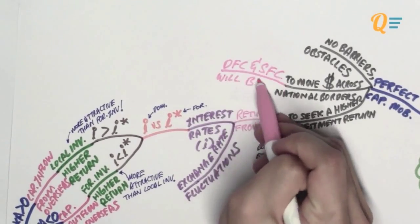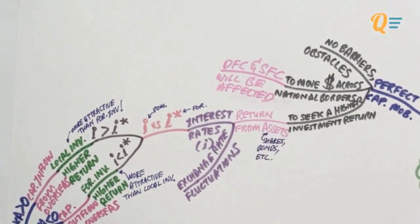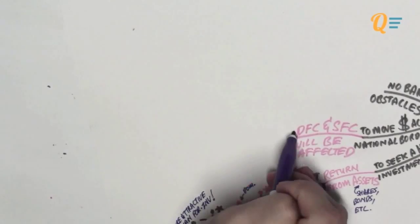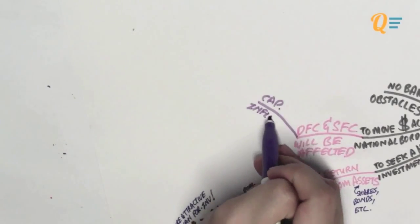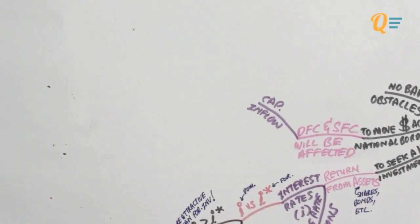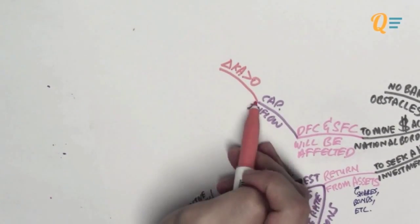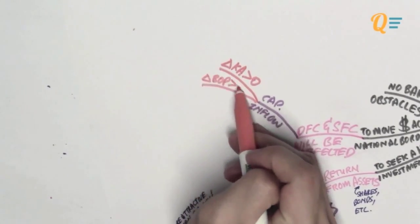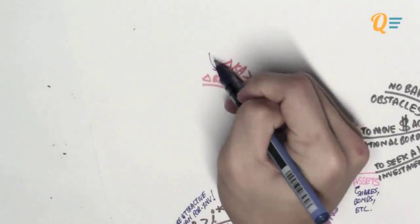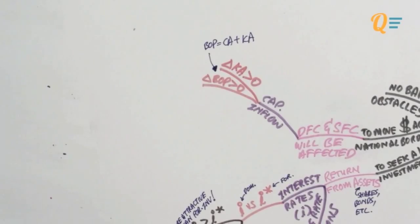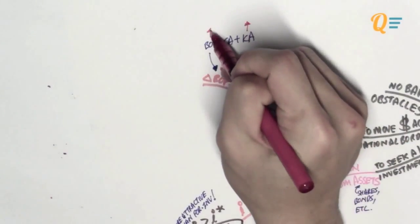So capital is money after all, right? And when you've got money flying in and out of national borders, what happens is that your demand and supply for foreign currency will be affected. So let's look at a scenario where we have capital inflow and obviously this is when the domestic interest rates are higher than the foreign interest rates. So your change in capital account will be more than zero, which means that your change in the balance of payment is positive because the BOP is the current account plus the capital account.